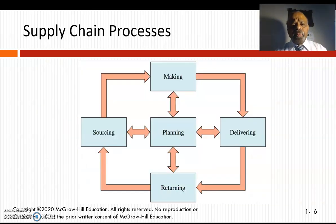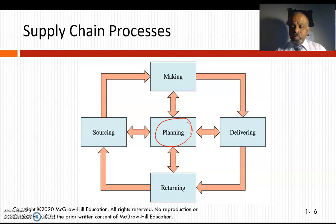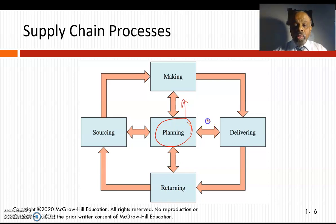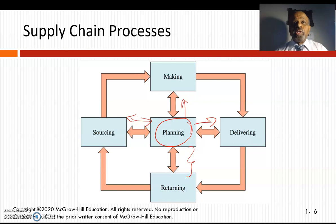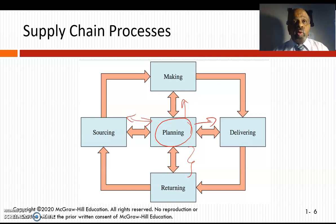The supply chain processes start with planning — planning the manufacturing of a car, dishwasher, TV, flooring, or anything you can think of. Once you have a great plan, you make the product, deliver it, source different supplies and work with suppliers. There is also a return process — if a customer is not satisfied, they return the goods to the manufacturer or the sales company, like a department store.